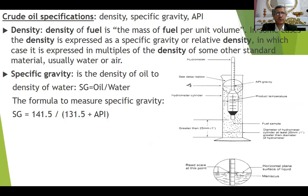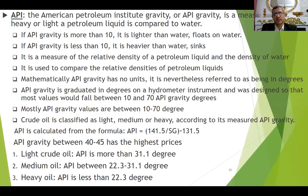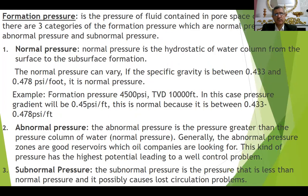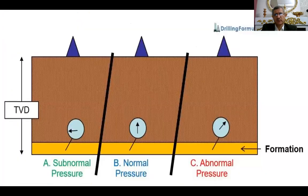Then we move to crude oil specifications, including density and specific gravity — the definition and law of each one. Then API (American Petroleum Institute) degree or gravity — what is it, what does it mean, and the values for oil heavier than water and lighter than fresh water. Formation pressure: we also have three types — normal pressure, abnormal pressure, and subnormal pressure. We can talk about them.